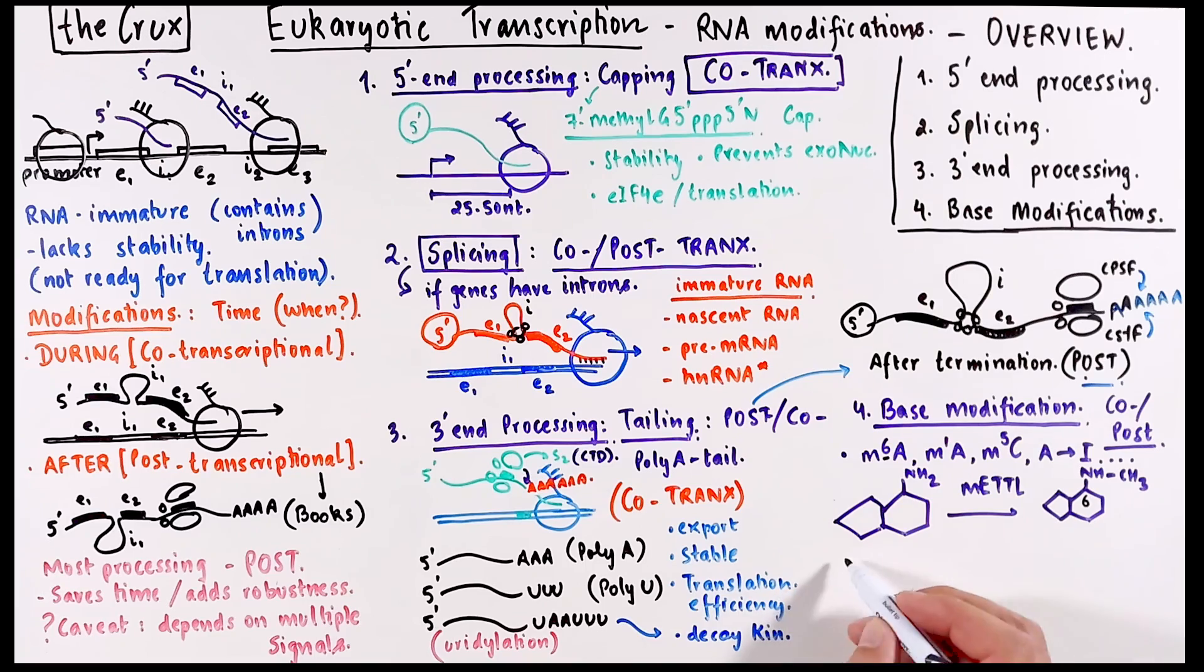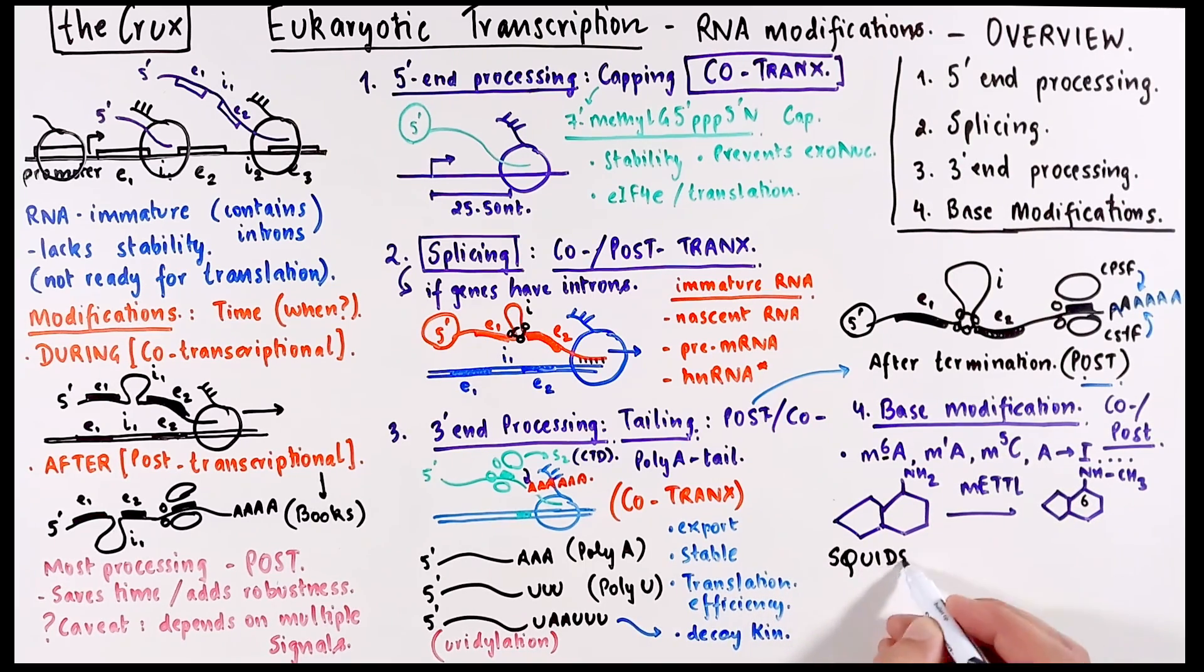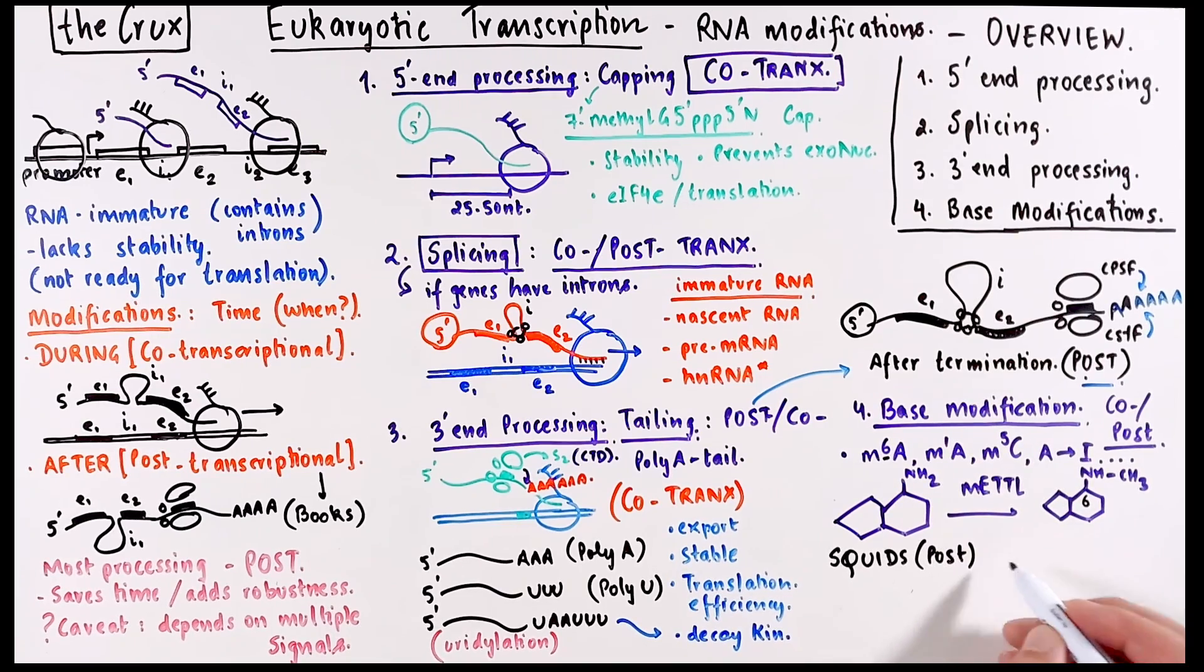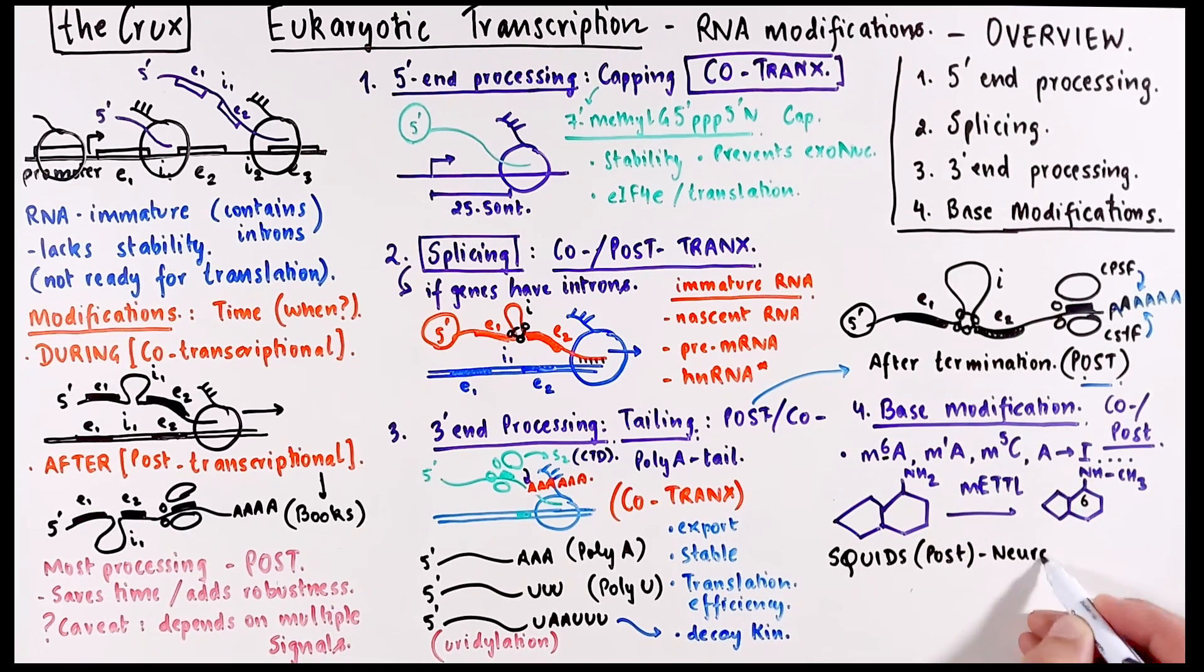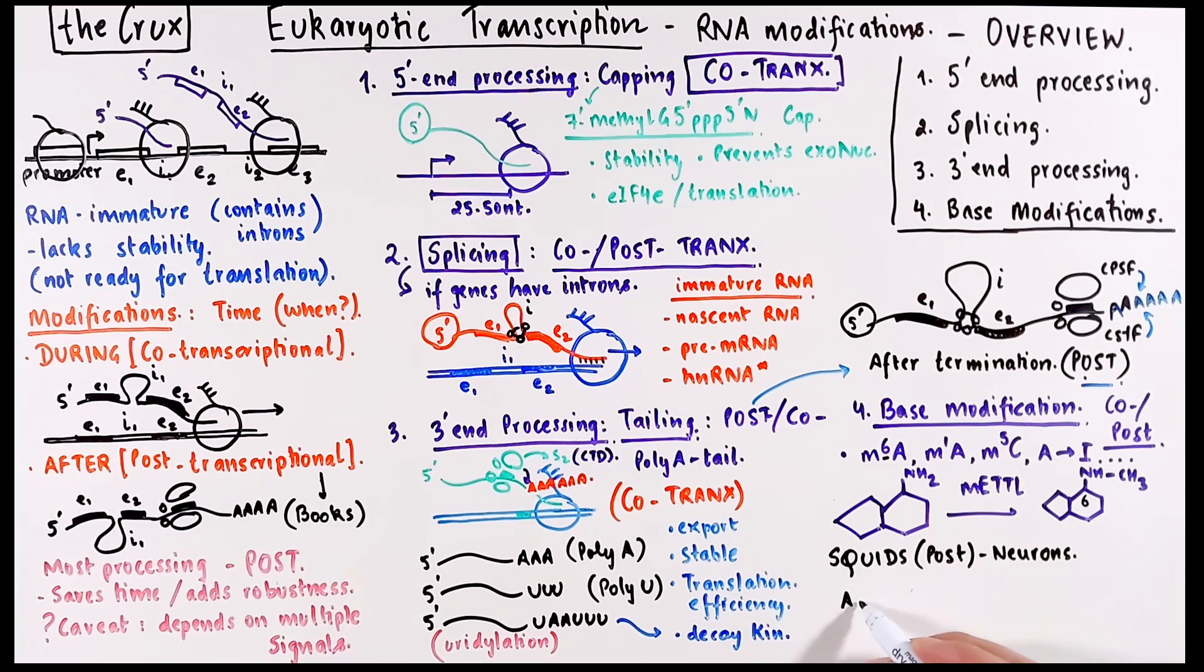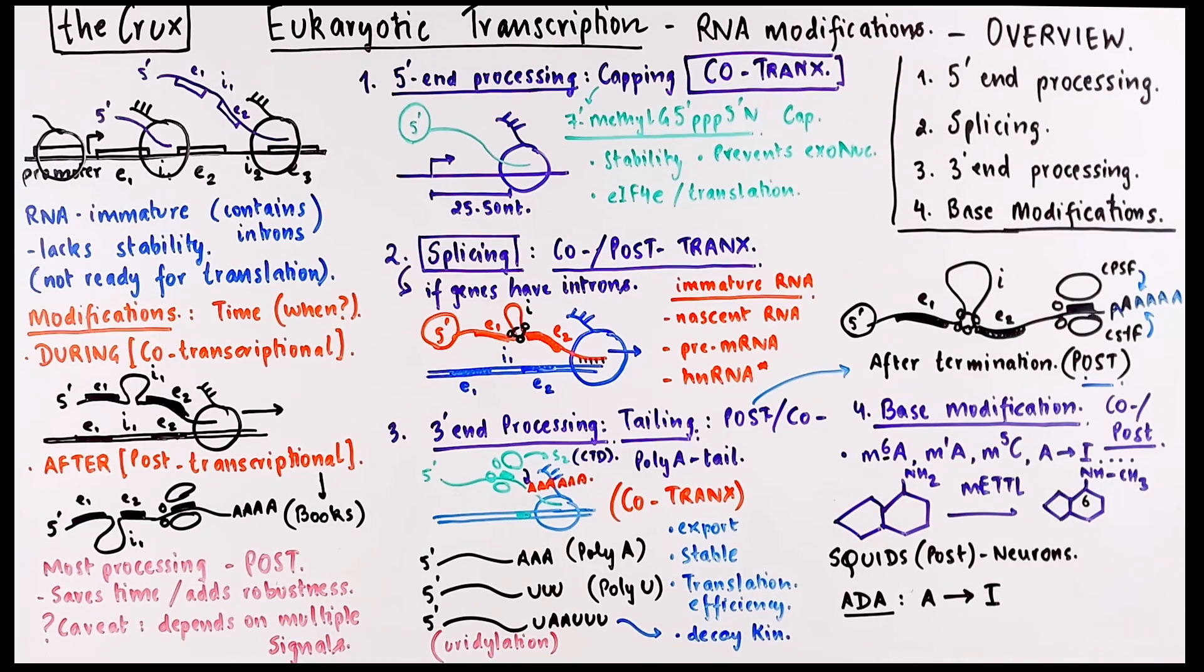A very interesting example of the base modification of RNAs happens post-transcriptionally in the cytoplasm of neurons in squids, where adenine is changed into inosine via this enzyme known as adenosine deaminase, which is a hydrolase, and it removes the amine group and replaces it with hydroxyl group. And the adenine now becomes inosine.